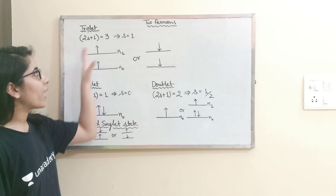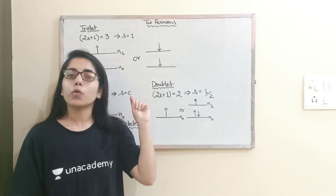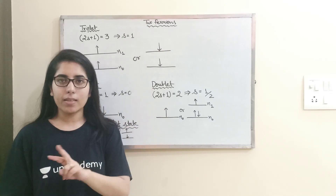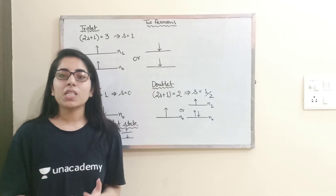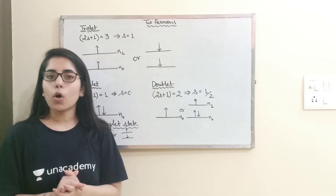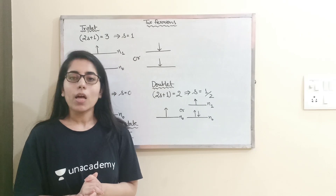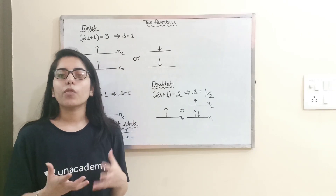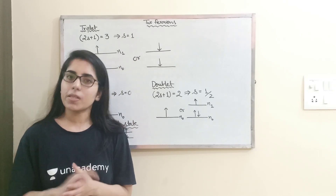I am taking the case of two fermions. Fermions means they will follow the Fermi-Dirac statistics, or they will follow Pauli's exclusion principle.